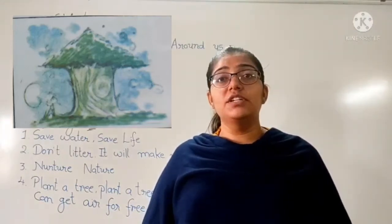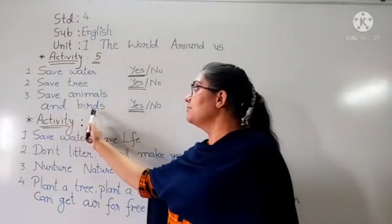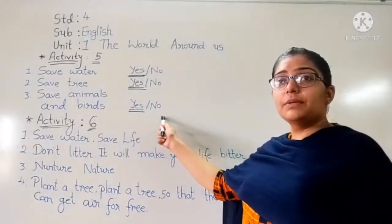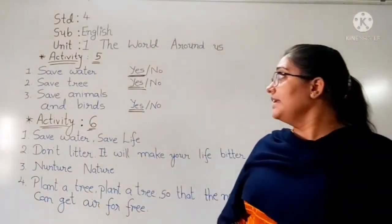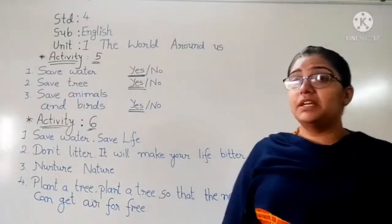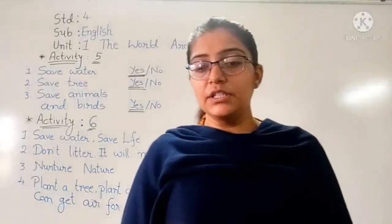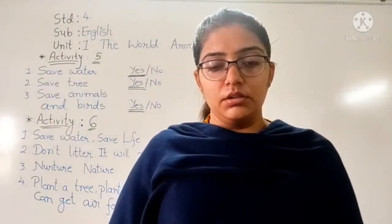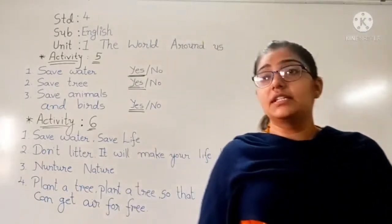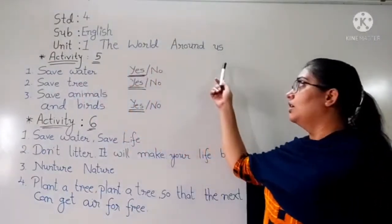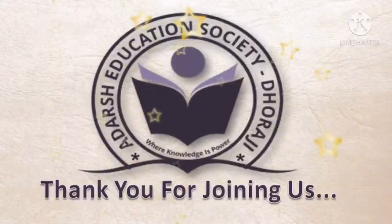So in this video, we covered activity 5 — save water, save trees, save animals and plants — where we gave our opinion and answered yes or no. If yes, we wrote what we will do to save them. After completing activity 5, a paragraph was given in our textbook, and then in activity 6, pictures and sentences were given in our textbook and we chose which sentence is suitable for each picture. Part three has been completed. Thank you for joining us.